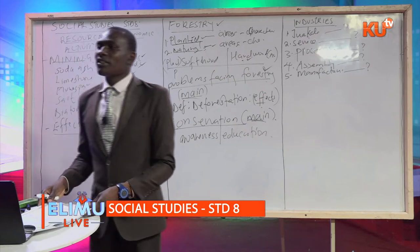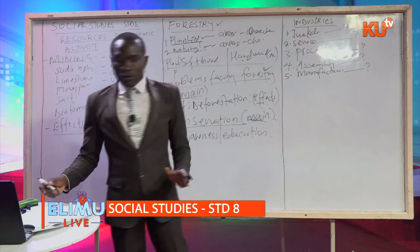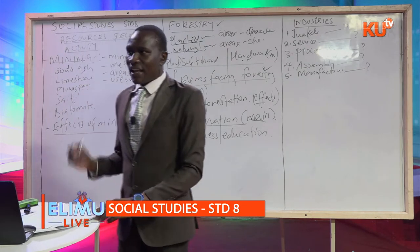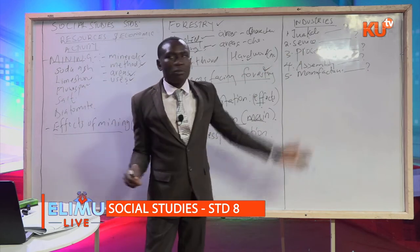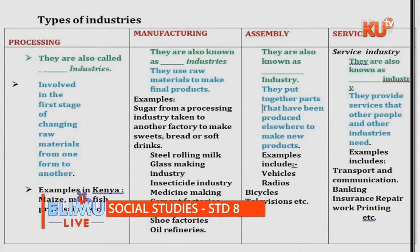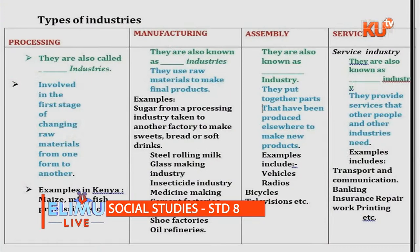Let us look at examples of these industries. Processing industry involves the first stage of changing raw materials from one form to another, and they are categorized into food and non-food processing industries. Manufacturing industries use raw materials to make final products. Assembly industry puts together parts that have been already produced elsewhere to make products. Service industry provides services that other people and other industries need.